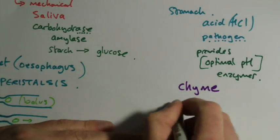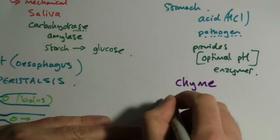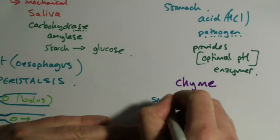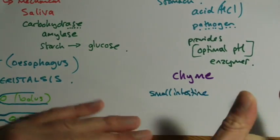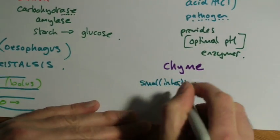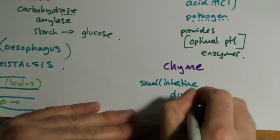The first part of the small intestine, the first whatever it is about 20 centimeters I think, is called the duodenum.